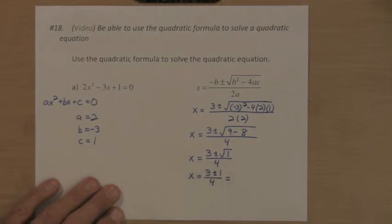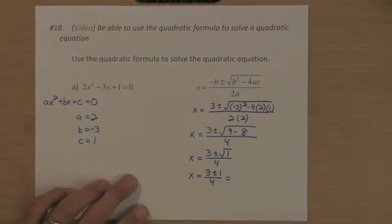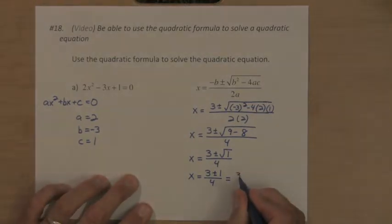The plus or minus part means that you use both the plus and the minus one to create two solutions. So one of them is 3 plus 1 over 4, the other one is 3 minus 1 over 4, and if we simplify those, those are our solutions.